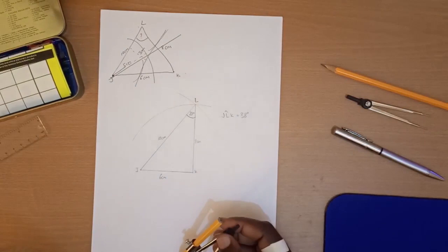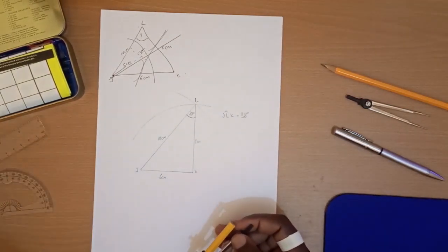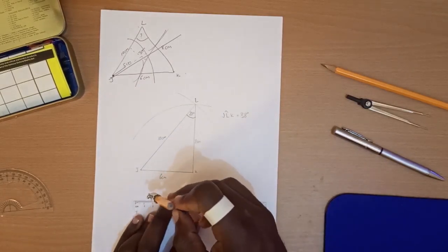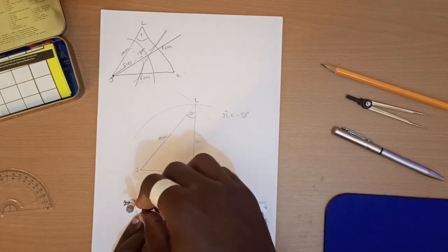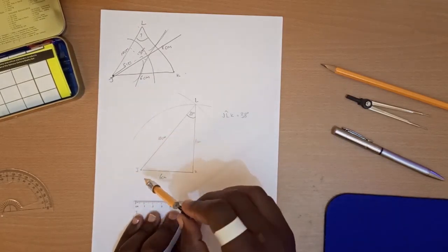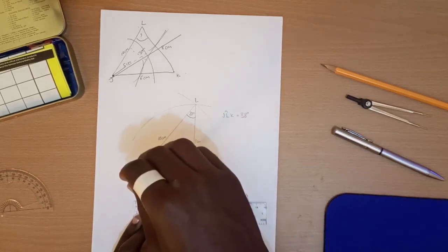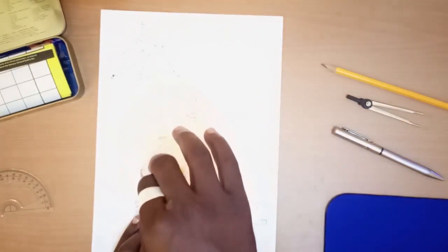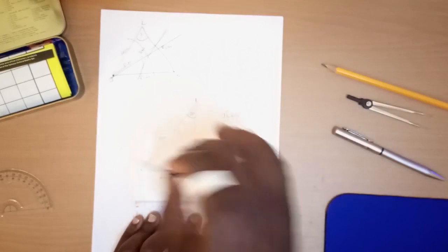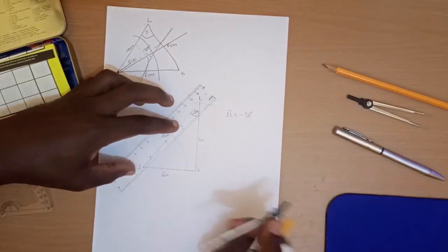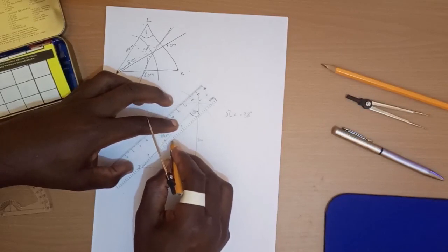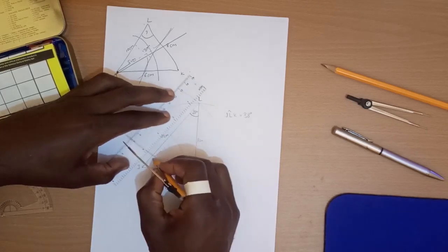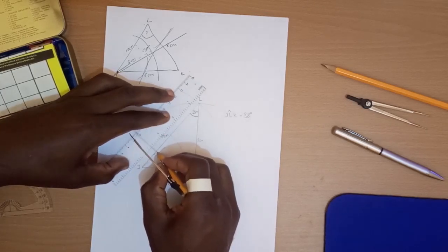Now let's draw these locus we've just shown there on our diagram. So the first part says 5 centimeters from J. Measure 5 centimeters on your ruler. That's 5 centimeters from J. So you indicate that this is 5 centimeters.